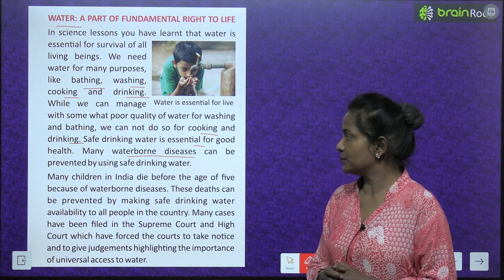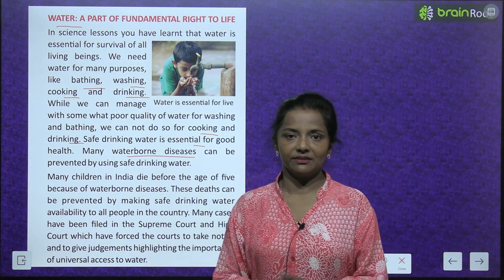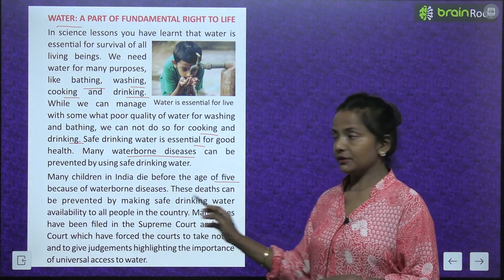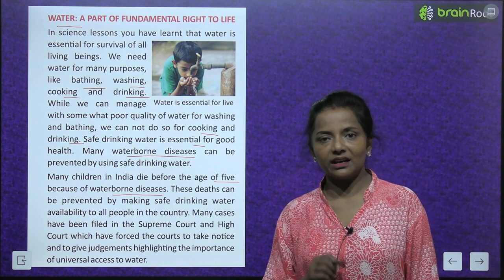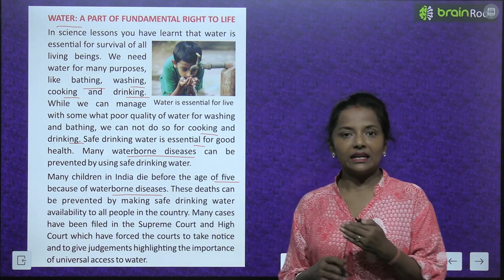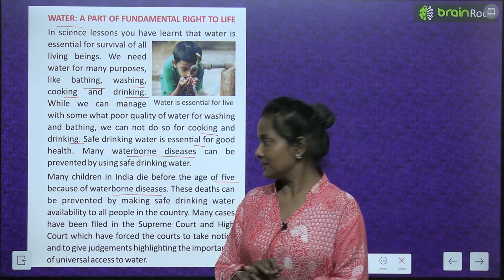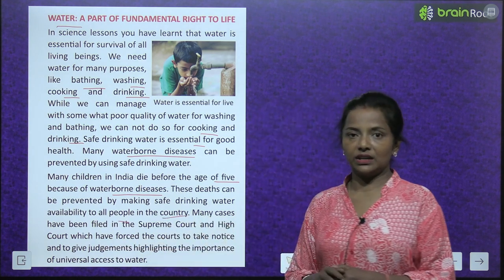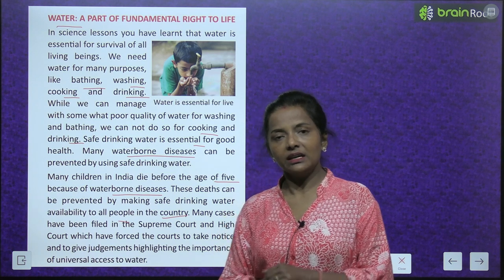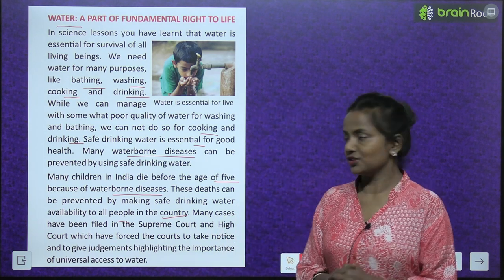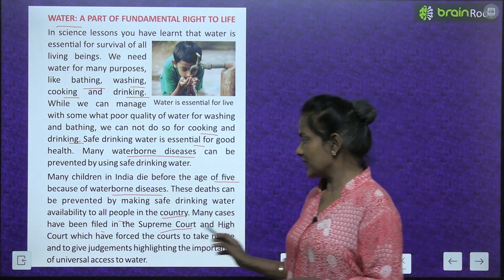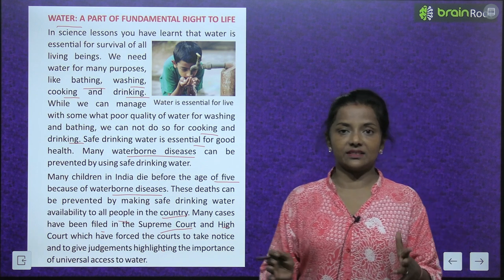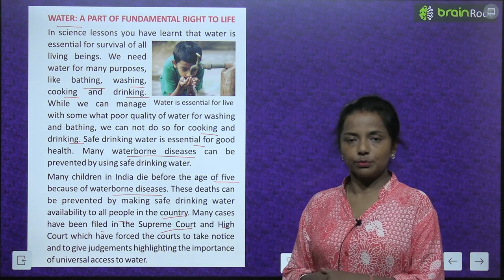Many waterborne diseases can be prevented by using safe drinking water. Jo paani se jo diseases hoti hain, unse bacha ja sakta hai agar safe drinking water use kiya jaye. Many children in India die before the age of five because of waterborne diseases. These deaths can be prevented by making safe drinking water available to all people in the country. Many cases have been filed in the Supreme Court and High Court highlighting the importance of universal access to water.